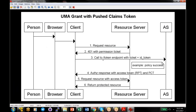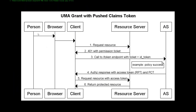Looking at two flows — sequence diagrams: the person using their browser connects to a client, the client calls the API at the resource server, the resource server returns 401 with a permission ticket, and the client calls the token endpoint with the ticket. In the good flow, the client may push claims by sending an ID token along with client credentials. The authorization response comes back with the access token.